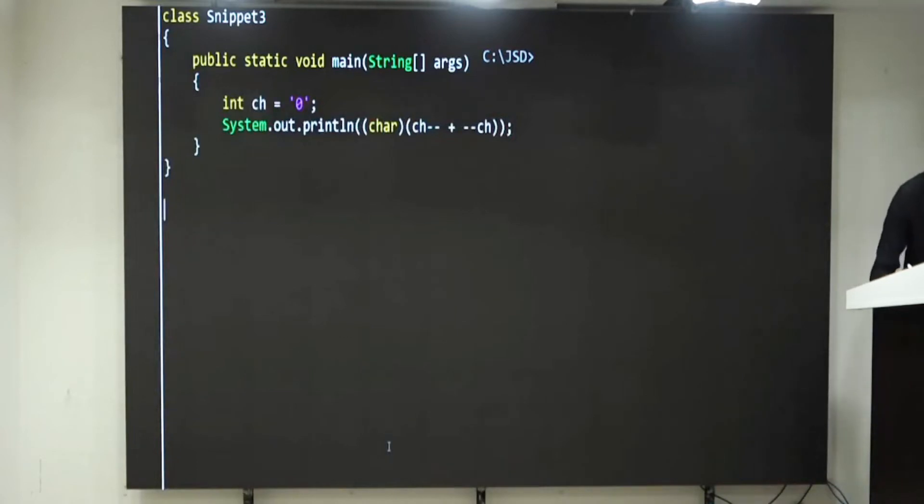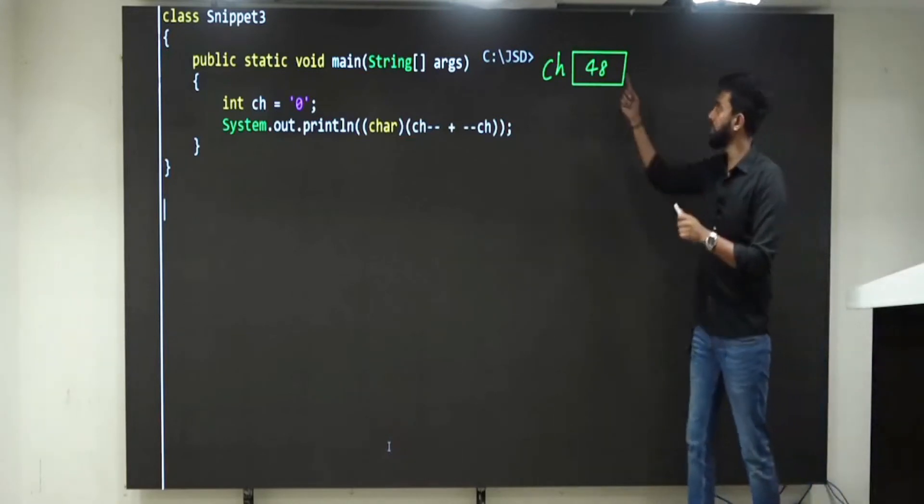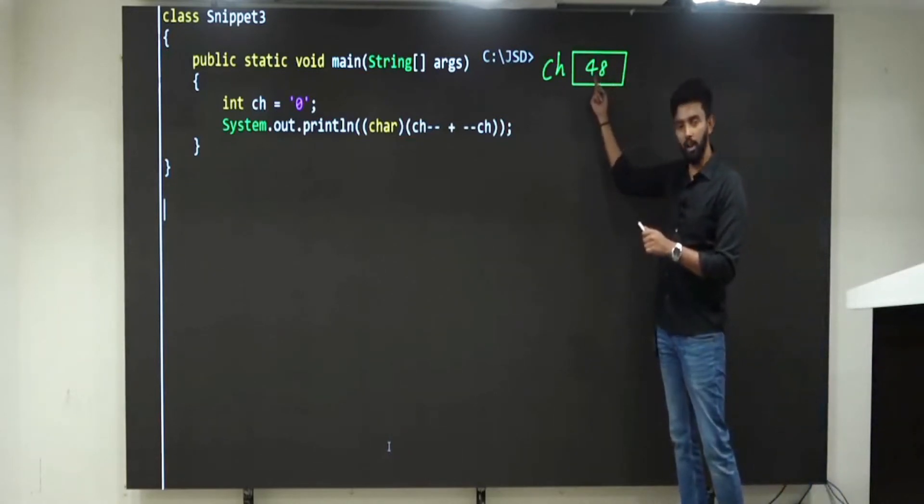Watch it. This is only ch. Inside ch, what am I storing? ASCII value of 0. Now what is the ASCII value of 0? 48. So in that ASCII table if you see, ASCII value of 0 is 48. Clear till here?